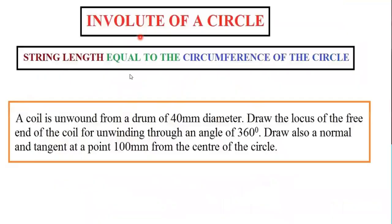The condition is the string length will be equal to the circumference of the circle. We are going to trace the path of a point as we unwind the thread or string. The problem: a coil is unwound from a drum of 40 mm diameter. Draw the locus of the free end of the coil for unwinding through an angle of 360 degrees — one complete revolution. Also draw the normal and tangent to a point 100 mm from the center of the circle.